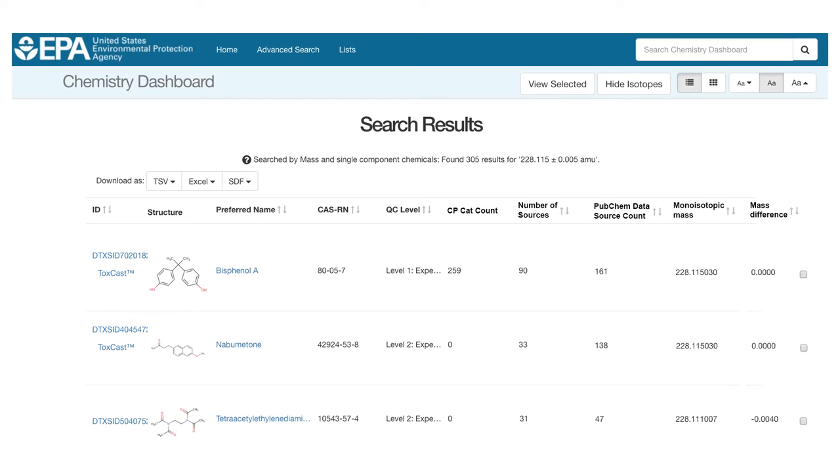The CompTox dashboard uses a ranking approach similar to that of the popular database ChemSpider. Both order search results according to how frequently a target compound occurs in different data sources, including scientific articles and patents.